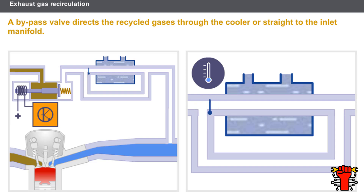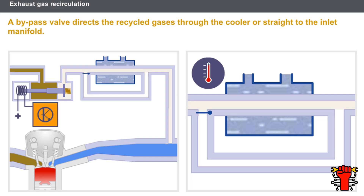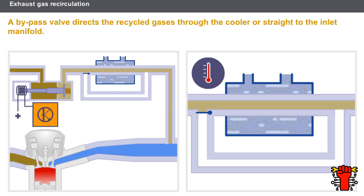Depending on the temperature conditions, this valve directs the recycled gases through the cooler or straight to the inlet manifold. During the period when the engine temperature is rising, the recycled gases are not cooled; the increased temperature of the recycled gases speeds up the engine's warming up. Once the temperature limit is reached, the gases pass through the cooler. The bypass valve is activated pneumatically via a solenoid valve controlled by the injection computer.